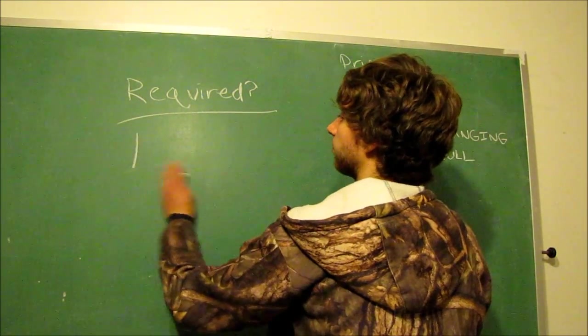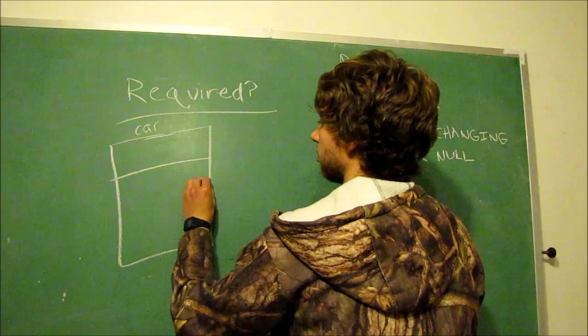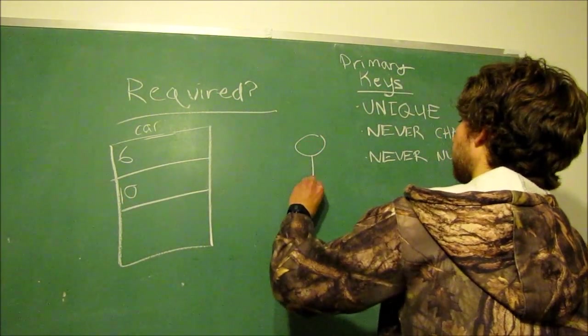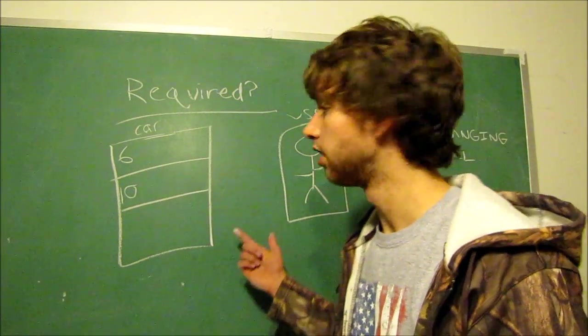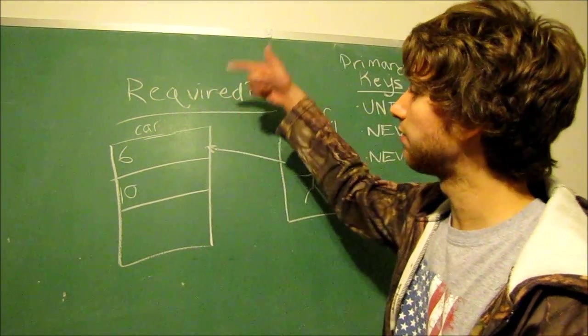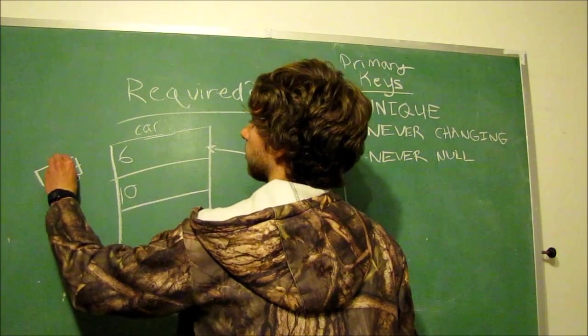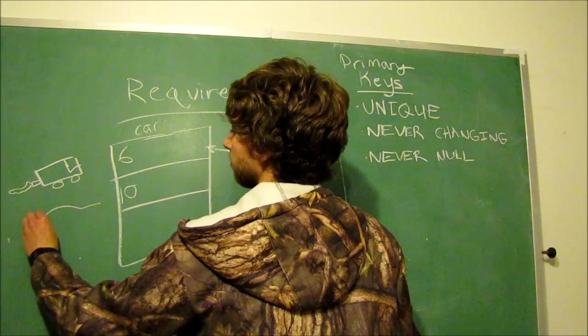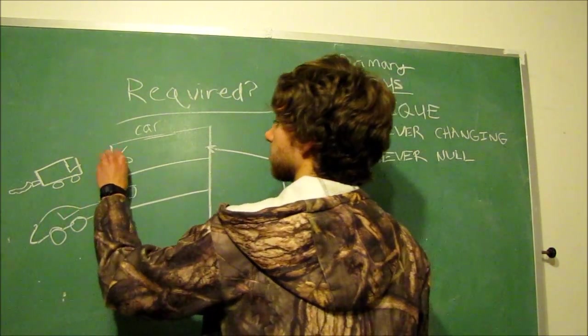We don't want the primary key values to change, but we could have the foreign key references change. For example, let's say we have a table over here. We'll have it be cars. And we have two rows. We have a car with the ID of 6 and a car with the ID of 10. And we have this guy over here. We have a table for him, the user table. And let's say for some reason we wanted to make a connection of what car he owned. Well, he might currently own 6. And we don't ever want the value of 6 to change and still be talking about the same car. So these are two separate cars. 10 talks about this car, 6 talks about this car.